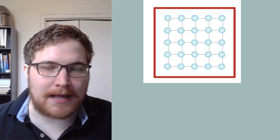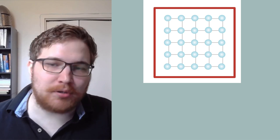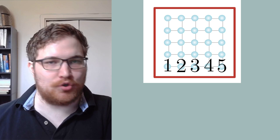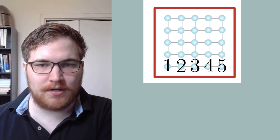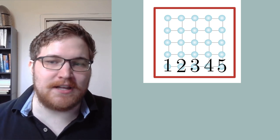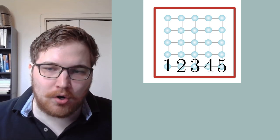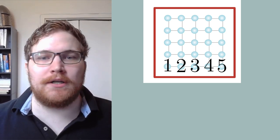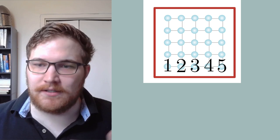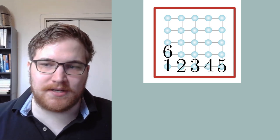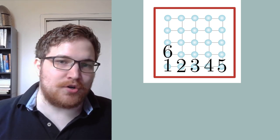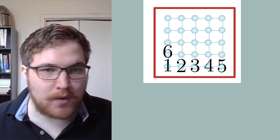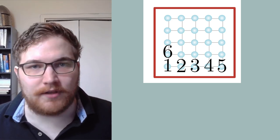So let's label our lattice sites. For simplicity, we will give them integer labels, despite the fact that it is a 2D grid. We label the bottom row as 1 through 5, and we could of course go on. The next site would be labeled 6, starting again from the left, but you get the picture. Through this way, we can generate all of the indices of the lattice.